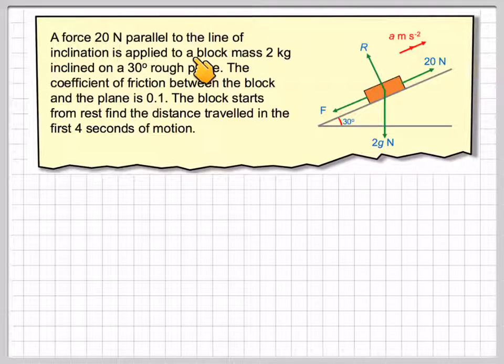A force of 20 newtons parallel to the line of inclination is applied to a block of mass 2 kilograms, inclined on a 30 degree rough plane. The coefficient of friction between the block and the plane is 0.1. The block starts from rest. Find the distance travelled in the first 4 seconds of motion.